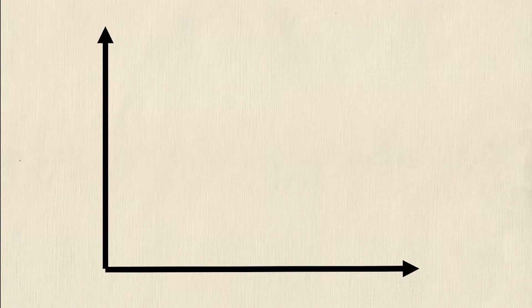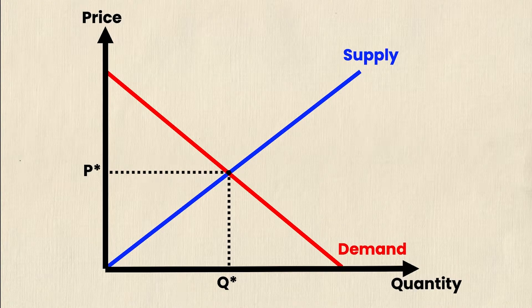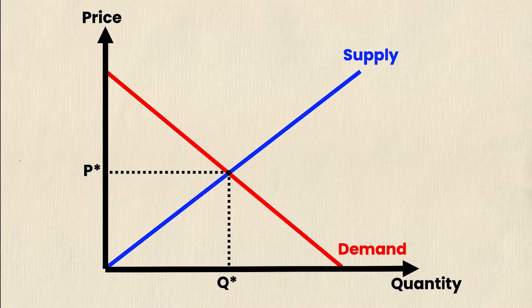So once again we'll start with our general supply and demand curve. We'll start with our axes, our supply and demand curves, and then a fully labeled diagram. So we have price on the y-axis, quantity on the x-axis. We have supply which is upward sloping in blue, and demand which is downward sloping in red, and I've denoted my equilibrium as p star and q star.